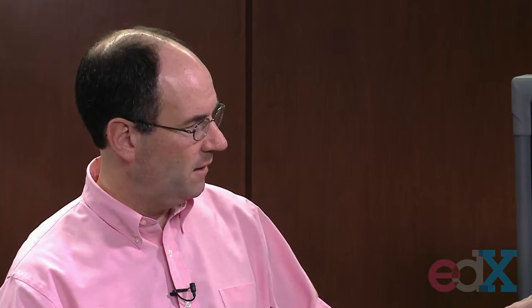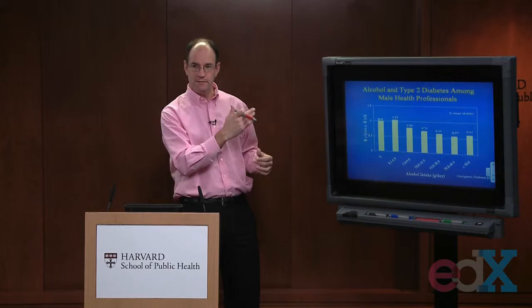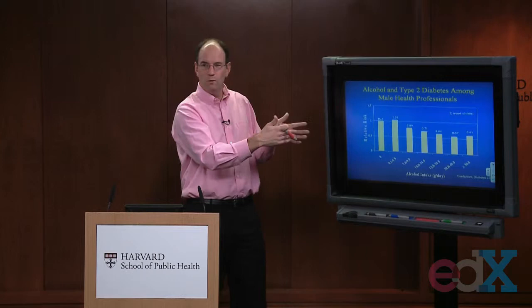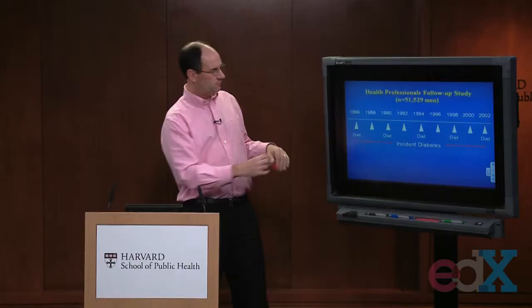Our first investigation came when a visiting scholar from Australia worked with me in the Health Professionals Follow-Up Study. This was more of a baseline analysis — what did they drink in 1986 and what was their risk of diabetes over time? We ignored the follow-up questionnaires where people may have changed their alcohol consumption and just looked at baseline. We found that the reduction in risk was even stronger for diabetes than for heart disease. The relative risk for one to two drinks a day was 0.64 compared to non-drinkers or light drinkers — a 36% reduction in risk of developing diabetes for moderate drinkers.